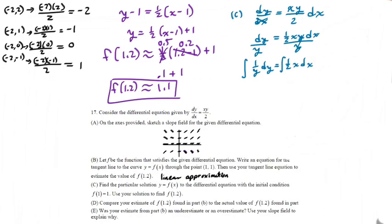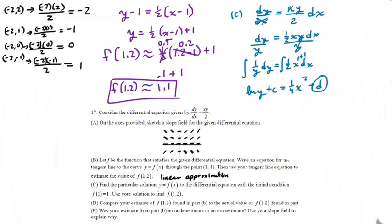We're going to integrate both sides. The integral of 1/Y is natural log of Y plus C, since it's an indefinite integral. On the right side, we add 1 to the exponent to get x², and we have 1 half divided by 2, which is 1 fourth. So we get: natural log of Y equals 1 fourth x² plus C. When you subtract one constant from another you just get another constant, so we keep it as plus C.